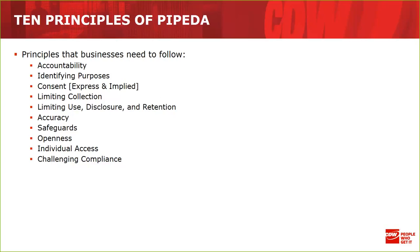Tenth: Challenging compliance — an individual shall be able to challenge an organization's compliance with the above principles, and that challenge should be addressed to the person accountable for the organization's compliance with PIPEDA. This is usually the chief privacy officer, if you have one; otherwise, someone you've appointed to handle privacy matters — typically someone in a governance or compliance role. If you don't have a privacy officer, now might be a great time to think about one.